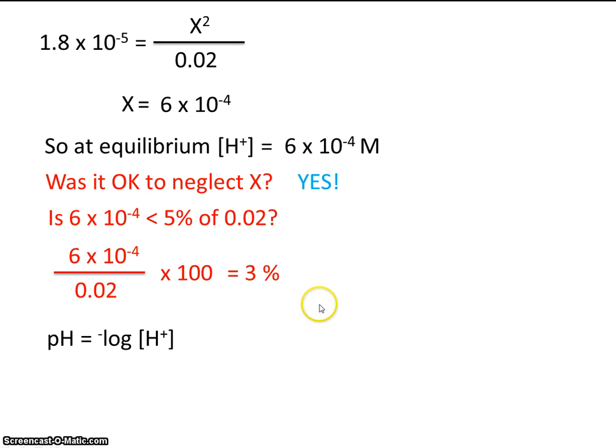Okay, so take the negative log of the hydrogen ion concentration, which we just calculated. So our final answer is a pH of 3.2.